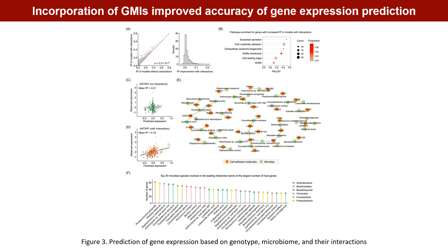To identify GMIs that may be involved in shaping the conjunctival transcriptome, we modeled host gene expression as a combination of the main effects of genotype and microbiome and their interaction effect. Interaction terms were constructed by multiplying the dosage of SNPs and the abundance of microbes. We found that the prediction accuracy of models with interactions was generally higher than that of models without interactions, and 2,158 genes showed increased accuracy in models with interactions.